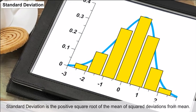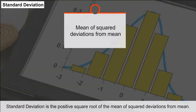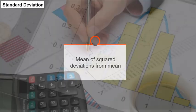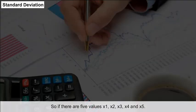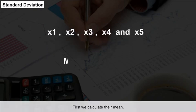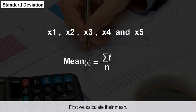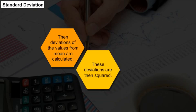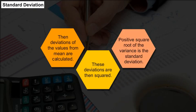Standard Deviation: Standard deviation is the positive square root of the mean of squared deviations from the mean. If there are five values x1, x2, x3, x4, and x5, first calculate their mean, then calculate the deviations of each value from the mean. These deviations are then squared, and the positive square root of the variance gives the standard deviation.